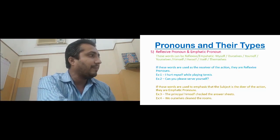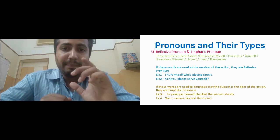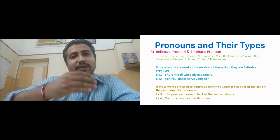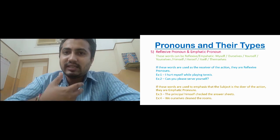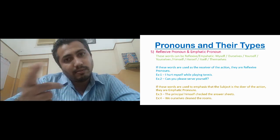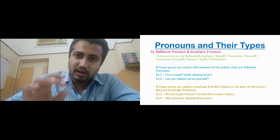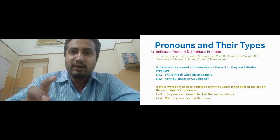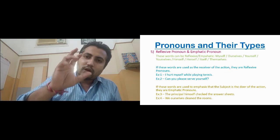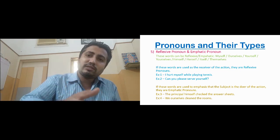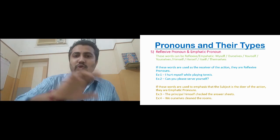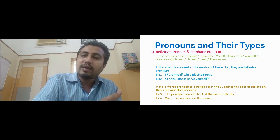Now let us go to the next type of pronoun: reflexive and emphatic pronouns. Any pronoun that is followed by 'self' or 'selves' — for example, first person singular: 'myself'; first person plural: 'ourselves'; second person singular: 'yourself'; plural: 'yourselves'; third person singular: 'himself', 'herself', 'itself' for masculine, feminine, and neuter respectively; and third person plural: 'themselves'. The same self-pronouns are used as both reflexive and emphatic.